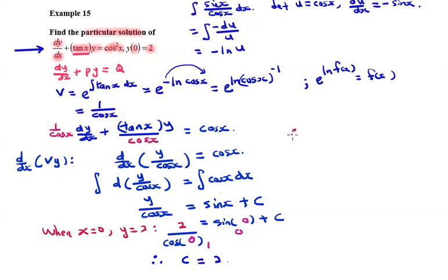Finally, we express y as the subject on the left-hand side. So y equals, times both sides with cos x, we have cos x times sin x plus 2.